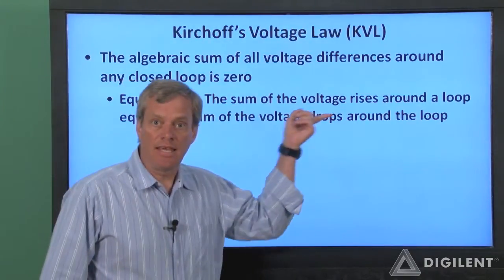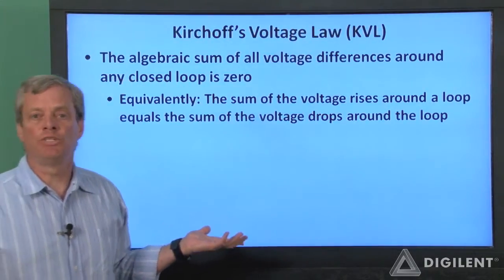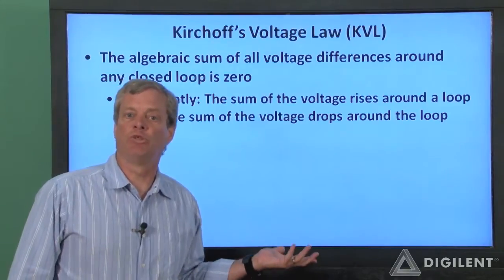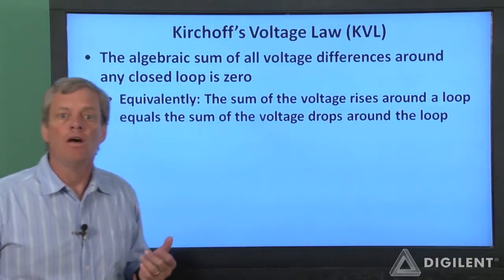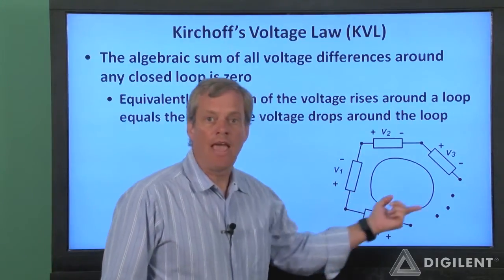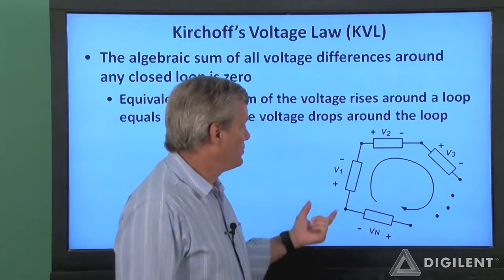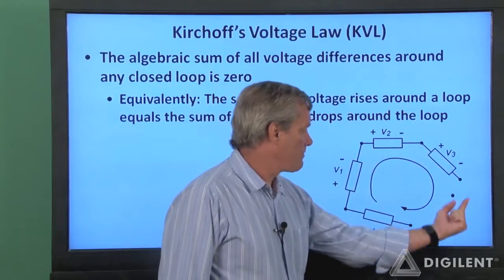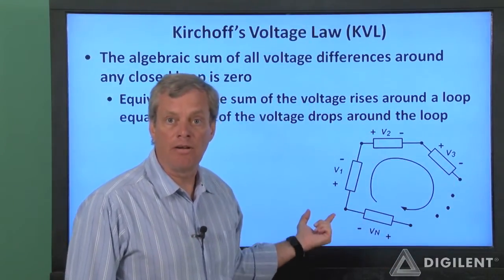So another way of stating KVL is that the sum of the voltage rises is equal to the sum of the voltage drops around the loop. For example, suppose we have a closed loop with N circuit elements. The voltages are V1, V2, V3, on up to V sub N with the indicated polarity.